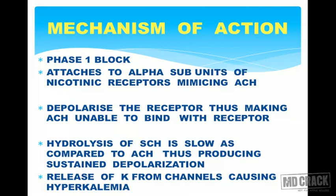Succinylcholine acts by two mechanisms: phase 1 block and phase 2 block. In phase 1 block, it attaches to the alpha subunits of nicotinic receptors, mimicking acetylcholine and acting as a competitive agonist. Once attached, it depolarizes the receptors, making acetylcholine unable to bind, thus decreasing the action of acetylcholine.